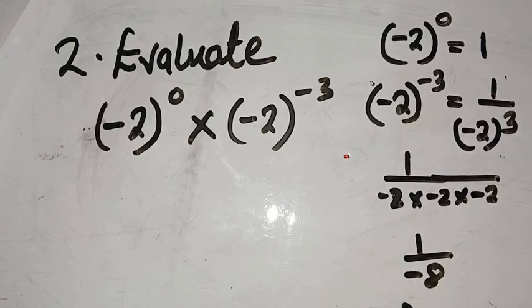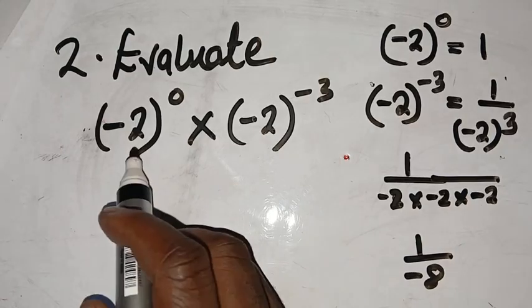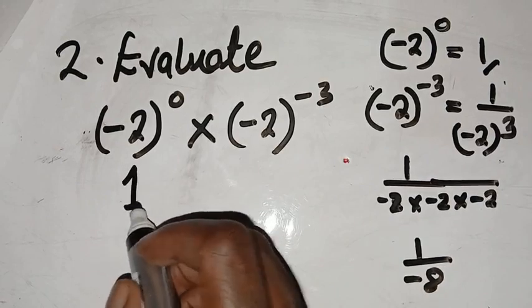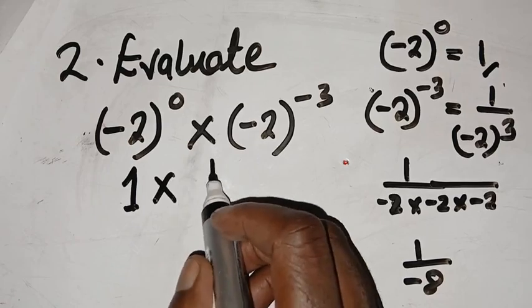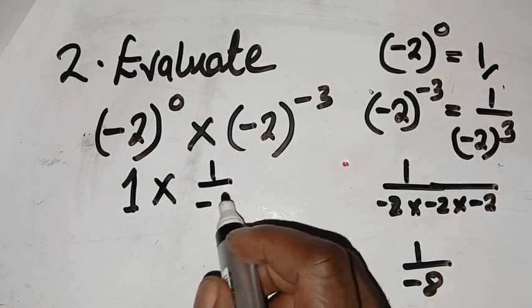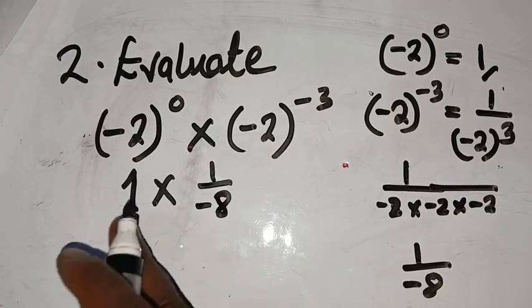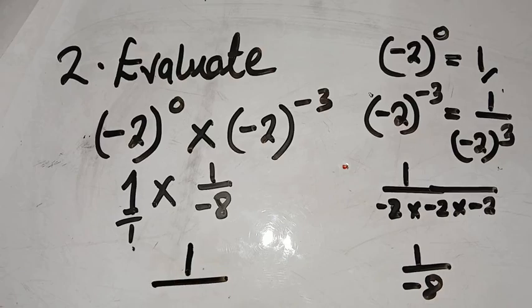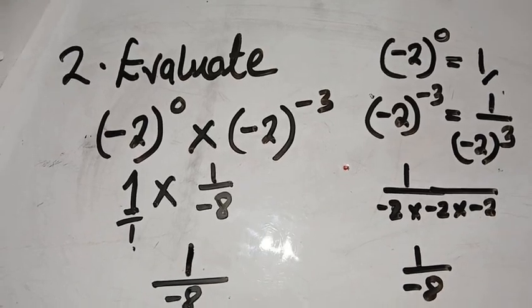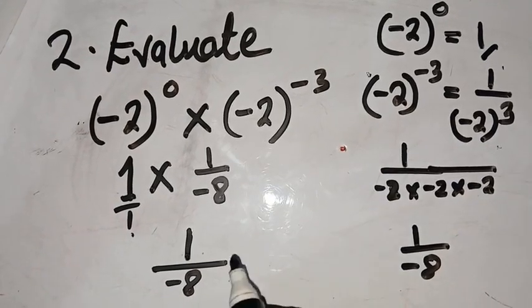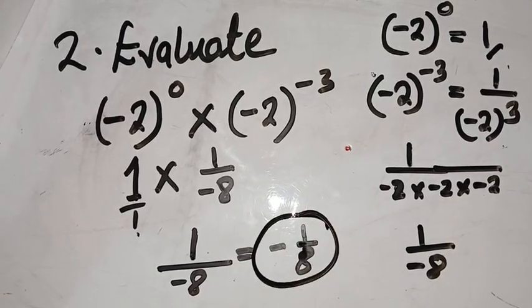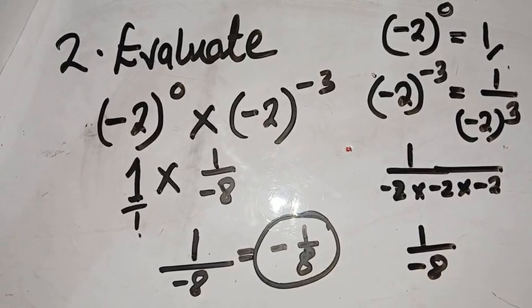So bringing it back to the question, this is going to be 1 multiplied by 1 over negative 8. You know that 1 multiplied by 1 is still 1, and 1 multiplied by negative 8 is still negative 8. Since this is a fraction, we write it as minus 1 over 8. That is our answer. Thank you very much, I hope you've gotten this one.